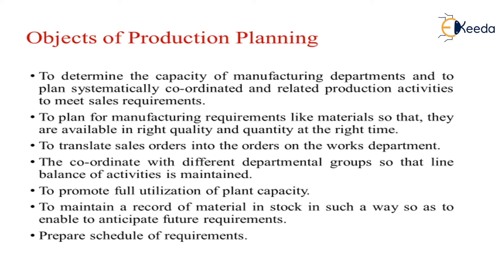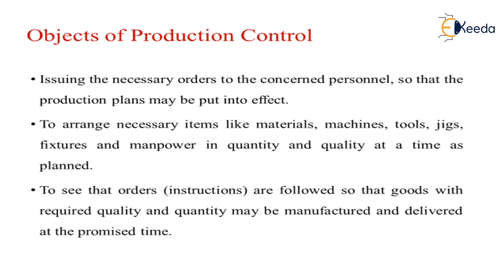We plan the manufacturing requirements, translate the sales orders, coordinate with different department groups so that a line of balance of activities is maintained, promote the full utilization of plant capacity, and maintain records of material stock to anticipate future requirements and prepare a schedule. For the mobile market, once we generate the mobiles, how to increase sales, what methods will be utilized, and how to collaborate with different departments to generate the new model and sell it properly — this is what we learn under production planning. We also issue necessary orders to put production plans into effect, utilizing all materials, machines, and manpower for the proper quantity and quality of production.